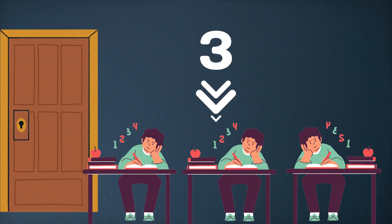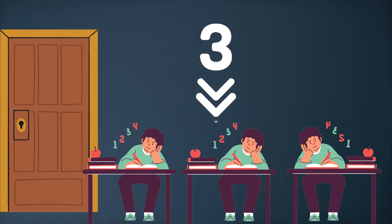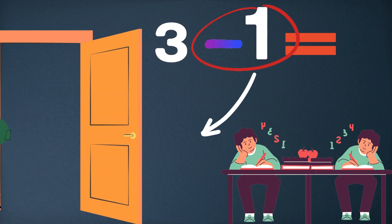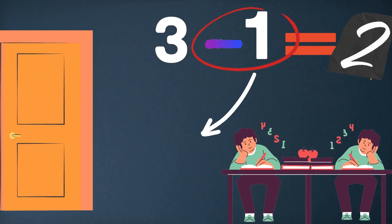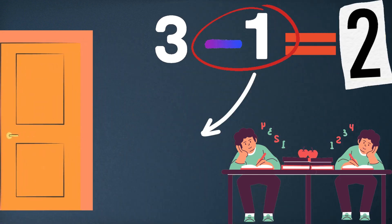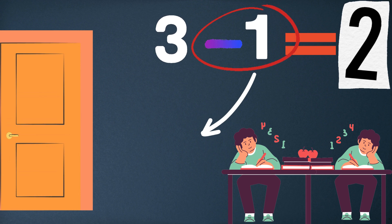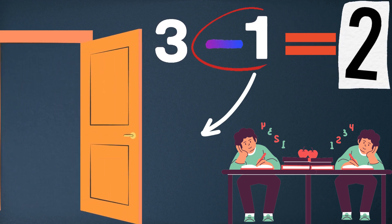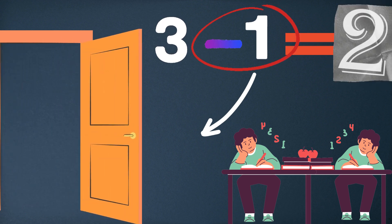Dear kids, let's solve an example of one-digit subtraction. Three boys are studying in the class. One boy left the classroom, shown by a red circle highlighting the number 1 with a subtraction sign. So only two boys are now studying in the classroom, so the answer is 2.